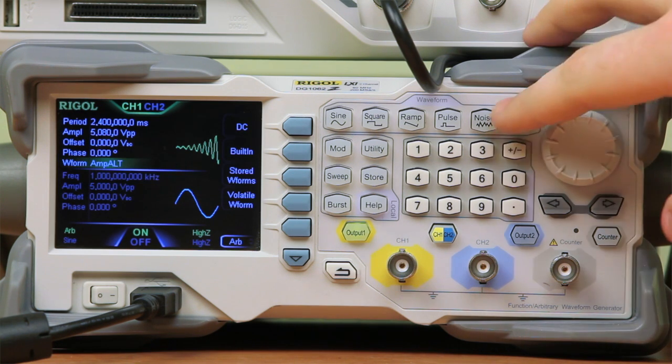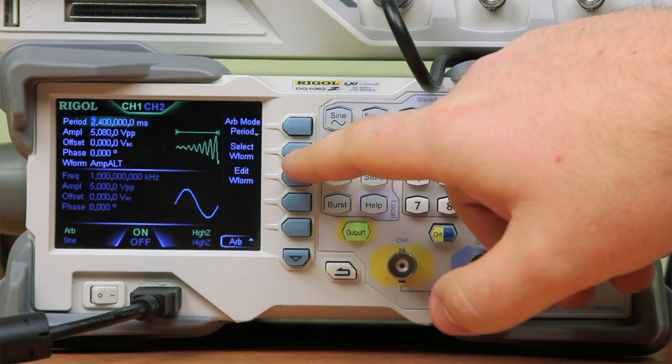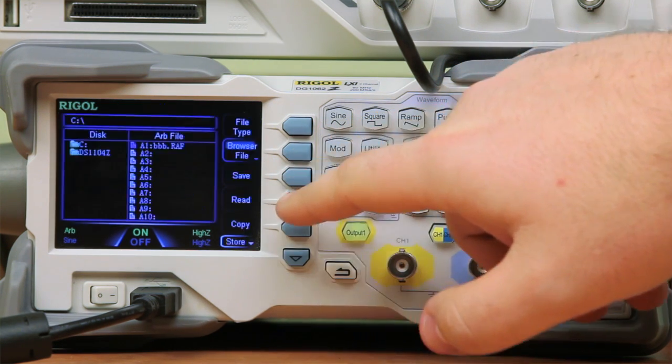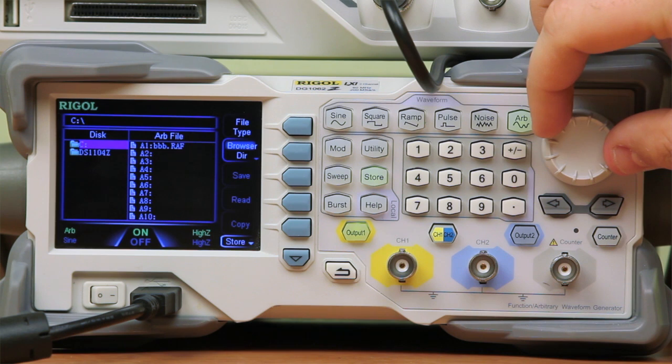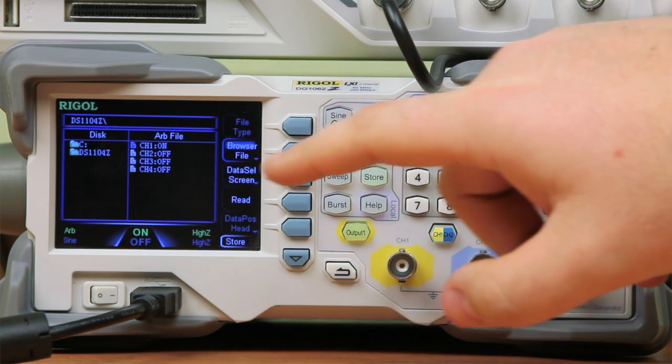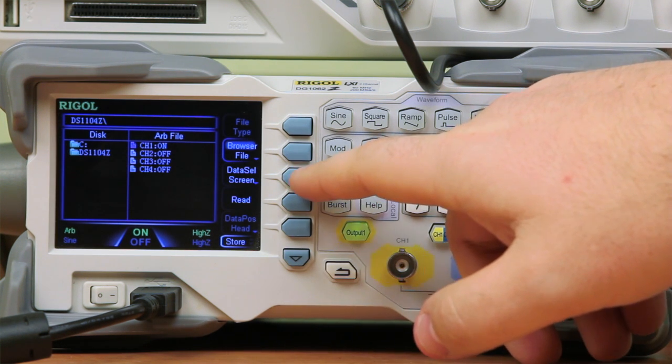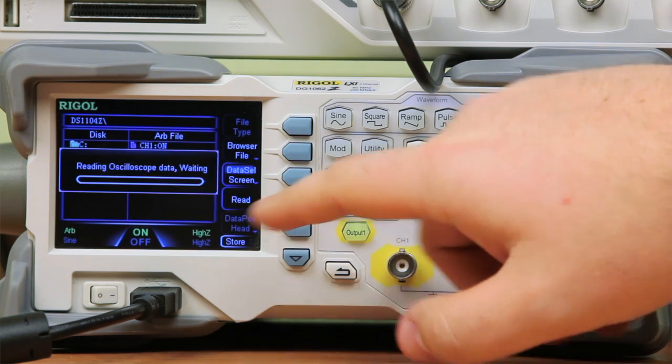At this point we're going to hit ARB and then arrow down to select the waveform. We're going to go with stored waveforms. From here we want to select directory, change this over to the 1000Z series, and then go back to file type. Make certain we're highlighted on the correct channel, for this case it's channel 1, and then we can choose data type for either what's on the screen or in the RAM. I'm going to just read the signal.